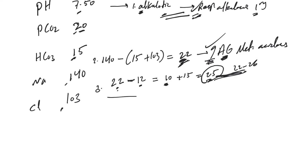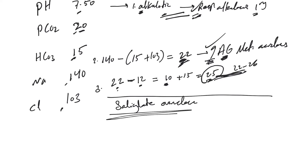So this patient has a primary respiratory alkalosis along with an increased anion gap metabolic acidosis. Such cases are seen with salicylate overdose — it causes increased anion gap metabolic acidosis and also stimulates the respiratory center, causing respiratory alkalosis. See how following these rules 1, 2, 3 makes things straightforward and easy to interpret.